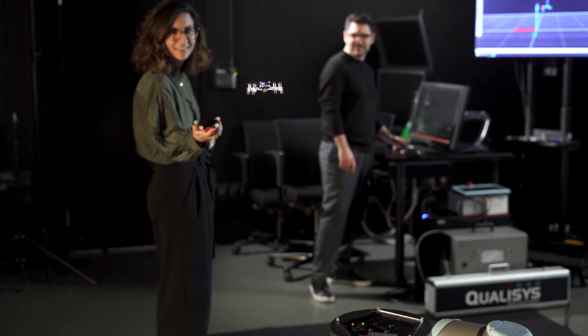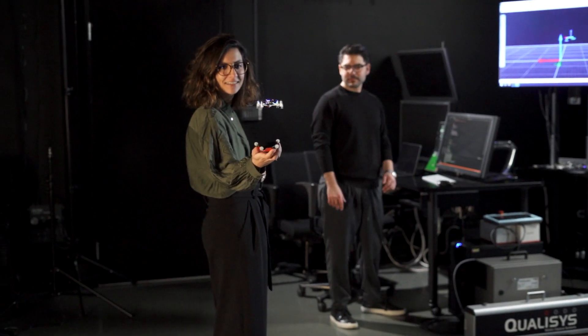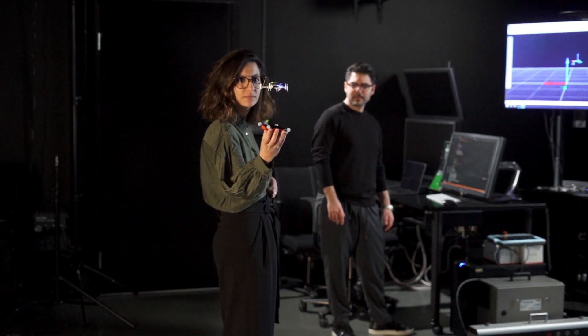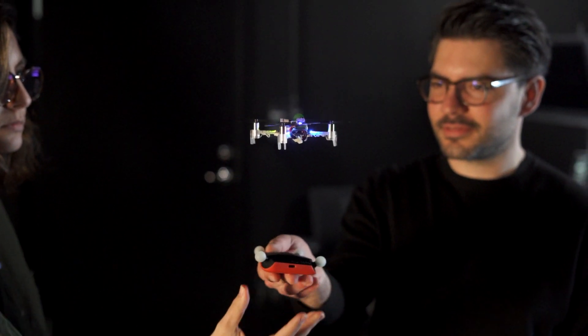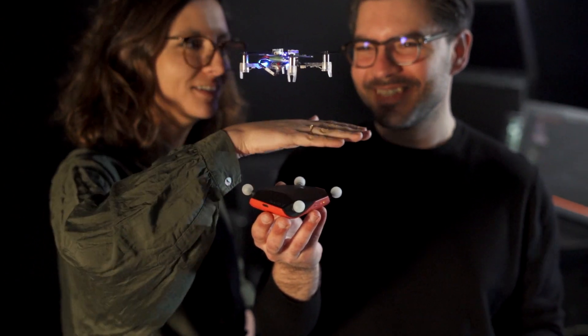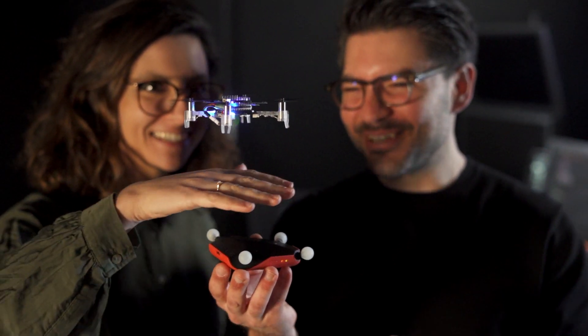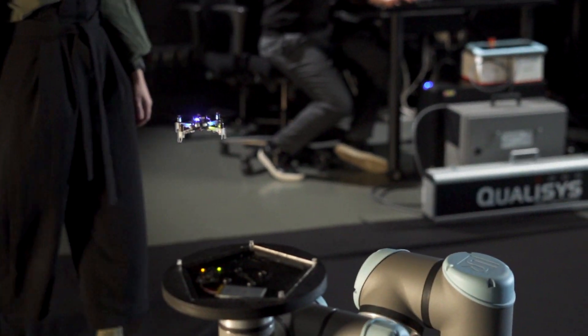The drawback of the tiny drone is that it doesn't have all the sensors and all the computers that you get loaded on its bigger brothers, so precise control of the flight path, detecting other objects, responding to human movements. For all of these purposes, we use Qualisys.